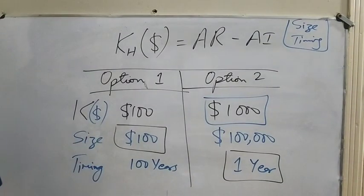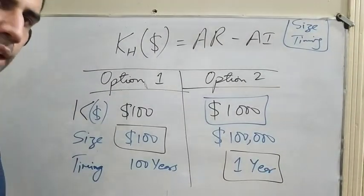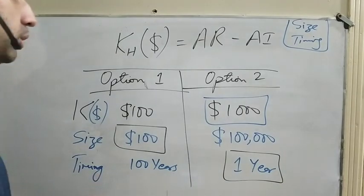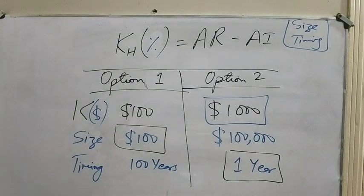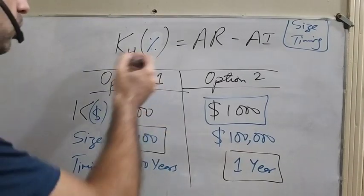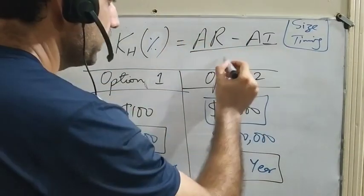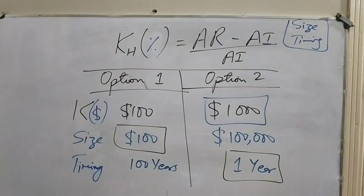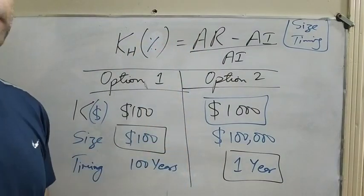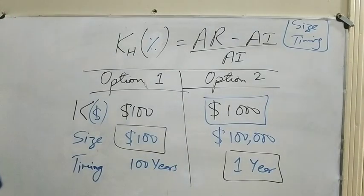To overcome these issues, instead of calculating return in rupees or dollars, we calculate return in percentage. The formula for return in percentage is: amount received minus amount invested, divided by amount invested. If we calculate return in percentage, we won't face the issues of size and timing.